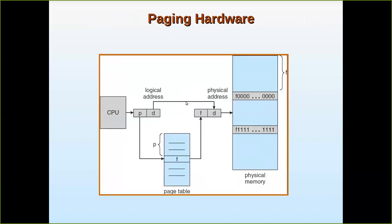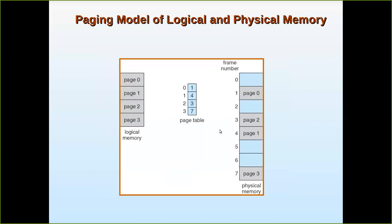This is the paging hardware. The CPU generates the page number and the offset within that page. Using the page number, the page table gives the frame number where the page is present. The physical address is then formed as: which frame it is in, and within that frame, which offset. For example, if it is the fifth line of the third frame, the physical address is generated accordingly.